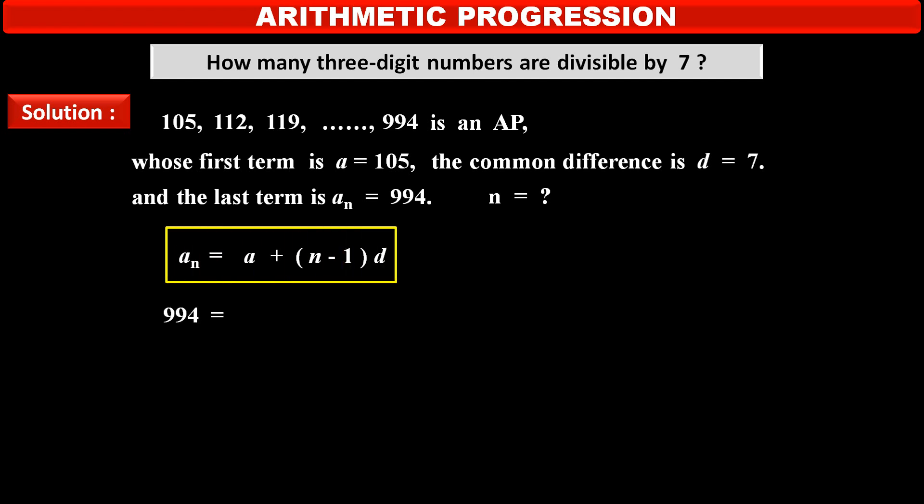Value of an, Nth term, 994 is equal to first term that is 105 plus in bracket N minus 1 into common difference 7. Subtracting 105 from both sides we get 889 is equal to, solving the bracket, 7N minus 7.